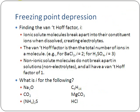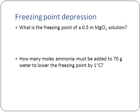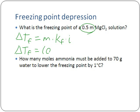Let's work out some freezing point depression problems. What is the freezing point of a 0.5 molal MgCl2 solution? We write out our freezing point depression equation: ΔTf = m × Kf × i. We're looking for ΔTf. The molality is 0.5. Unless told otherwise, we assume the solvent is water, and for water Kf = 1.86 degrees Celsius per molal.